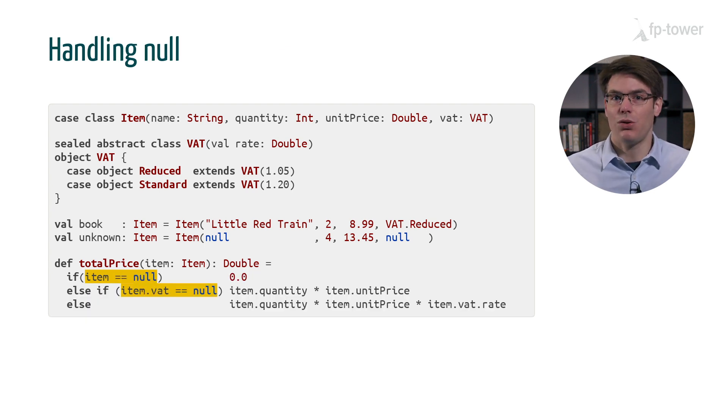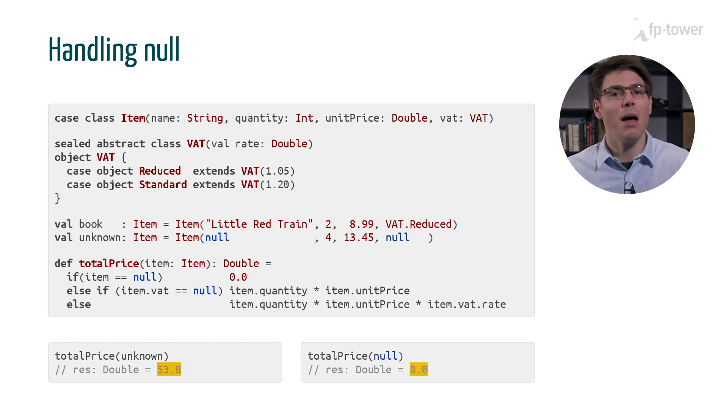We could potentially fix this issue by using multiple if-then-else to check whether Item or the VAT field are equal to null. However, this approach is error-prone because nothing forces us to do these checks, so we often forget them in practice. Even worse, handling null makes the code difficult to read and test because we have to consider multiple branches even for something as simple as calculating the total price.